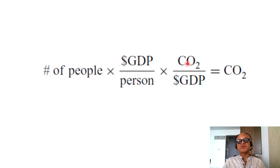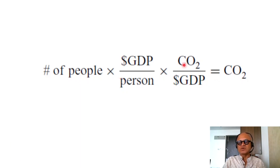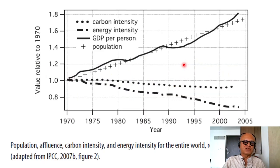The amount of CO2 per unit of GDP depends on the energy intensity and the carbon intensity of the energy driving GDP. That determines the total CO2 emitted. You can cancel the GDP terms and be left with total CO2 — that's how the IPAT equation works.